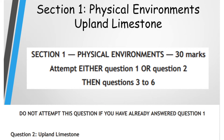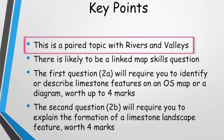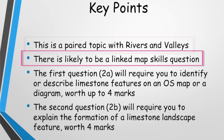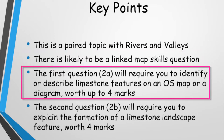A few key points. This is a paired topic with rivers and valleys, and you will have been taught both of these in class. You should therefore avoid Question 1 on the exam paper, which will be about two other landscape types, and go straight to Question 2. Part of Question 2 is likely to be linked to an Ordnance Survey map or a diagram, and will test your ability to identify limestone landscape features from them. This is likely to be Part A of the question, with up to four marks.